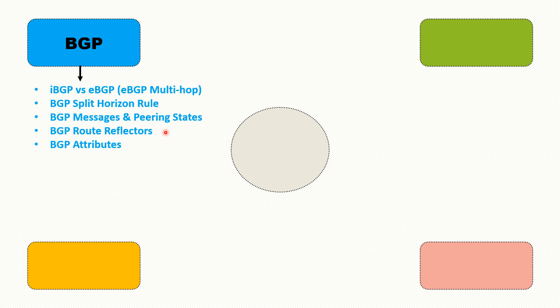Last but not least, you should prepare BGP attributes, which can make the protocol very complex. They are mainly used to influence traffic. For outgoing traffic, you can use local preference or weight if you have Cisco in the core. For incoming traffic, you can use AS path prepending or MED. You should know how all BGP attributes influence traffic going in and out of your network.